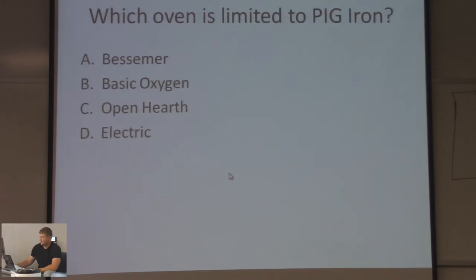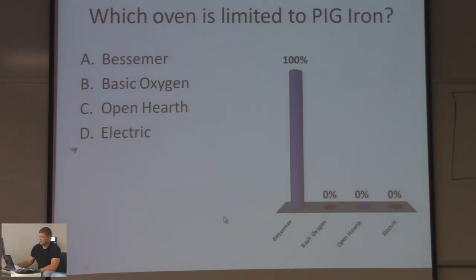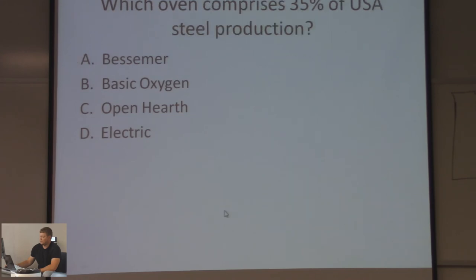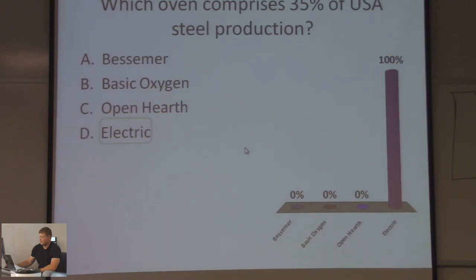Which oven is loaded with pig iron? The Bessemer, the basic oxygen, open earth, or electric? Which oven comprises 35% of USA steel production? The Bessemer, basic oxygen, open earth, or electric? If you answered electric, you are 100% accurate — it produces 35% of the United States steel production.